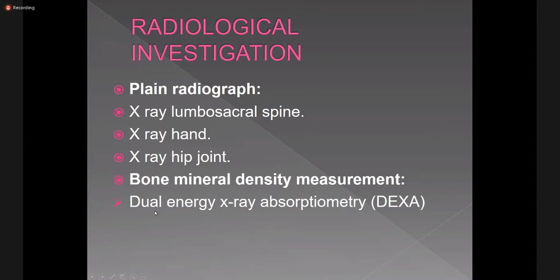To measure bone mineral density, the patient is placed in a machine which sends two types of X-rays. One X-ray is absorbed by soft tissues and one is absorbed by bone. The absorption of X-ray by soft tissues is subtracted from the absorbed X-ray by bone. This is how bone mineral density is measured and it is scored by Z-score and T-score.